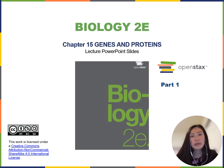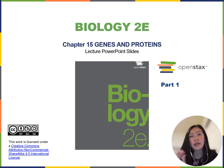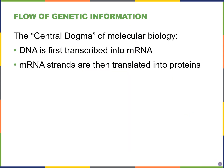Welcome to Chapter 15. In this video, we're going to be looking at genes and proteins — more specifically, how we get from DNA to messenger RNA, and then from messenger RNA to proteins. This process of gene expression, going from DNA to messenger RNA and then to proteins, is also known as the central dogma of molecular biology.